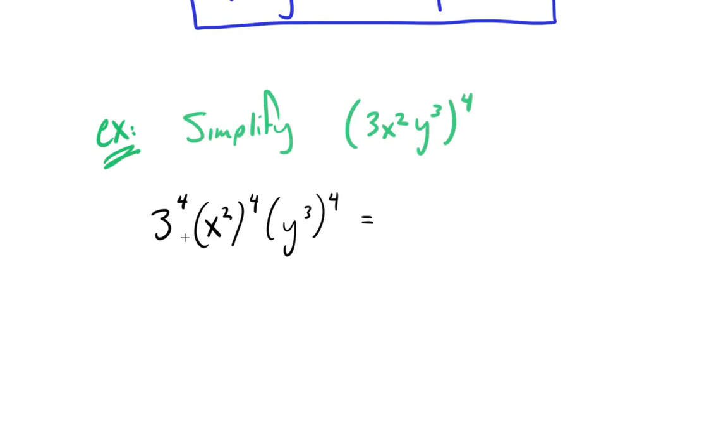Then we just have to evaluate each of these individually. So 3 to the 4th, 3 times 3 times 3 times 3, that's going to be 81.